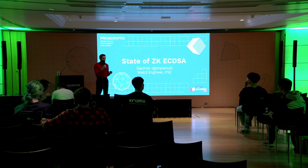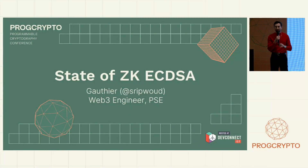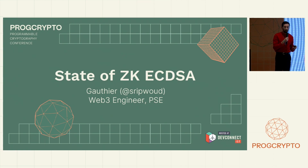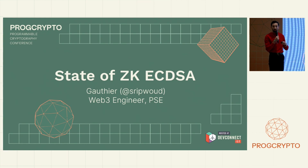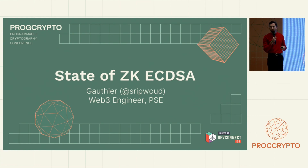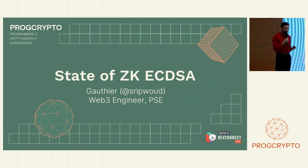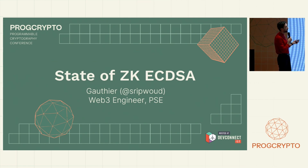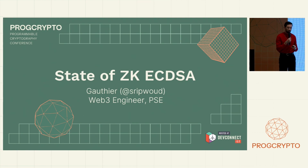The room isn't packed but I think I can safely bet that at least one of you has already been eligible for an airdrop, and if you value privacy like me, you probably wish you had the possibility to claim your tokens on a different address than the address included in the airdrop snapshot. ECDSA ZK proofs make this possible. My name is Gautier, I'm an engineer and coordinator at PSE, and I will tell you about what ECDSA ZK proofs are, what the challenges are to generate them, and what the solutions are.